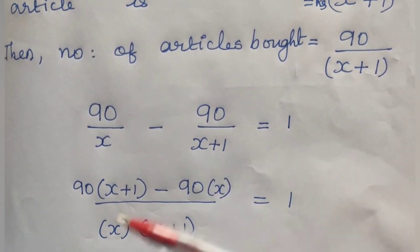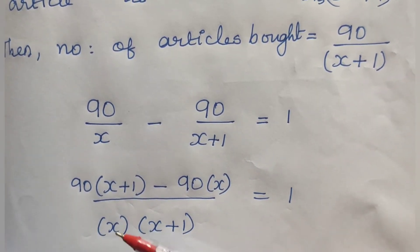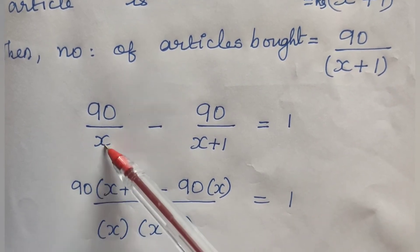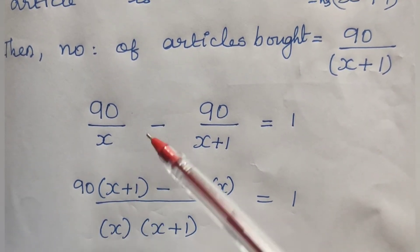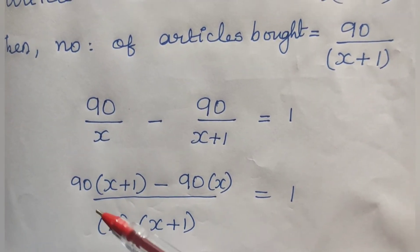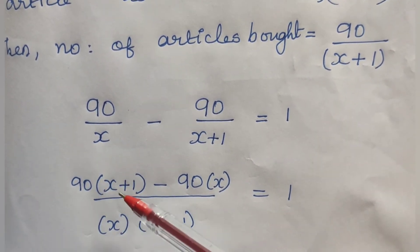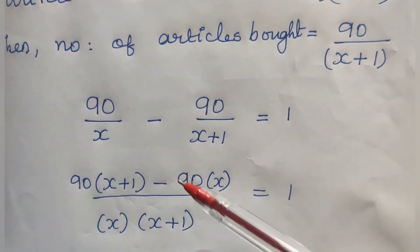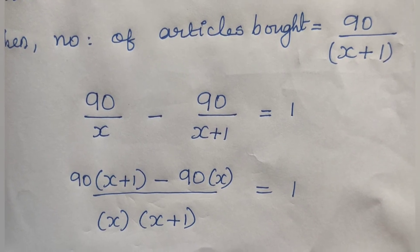I take the LCM of the denominators, which are X and X plus 1, so LCM is X into X plus 1. The numerator becomes 90 into X plus 1 minus 90 into X, all divided by X into X plus 1, equal to 1. You can also think of this as cross multiplication.